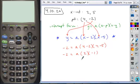4 minus 5, negative 1. Negative 2 is equal to negative 2a, divide by negative 2, and you have your a value is 1.